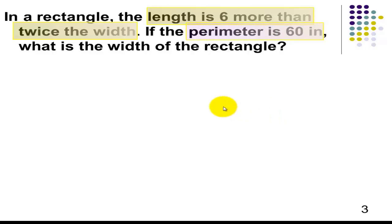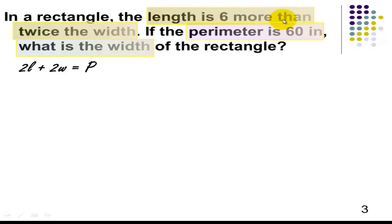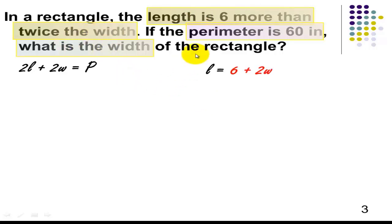Let's start by writing the formula for the perimeter of a rectangle: 2L plus 2W equals P. Now, 6 more than twice the width means I can write L equal to 6 plus 2W. The perimeter is given, so P is equal to 60.